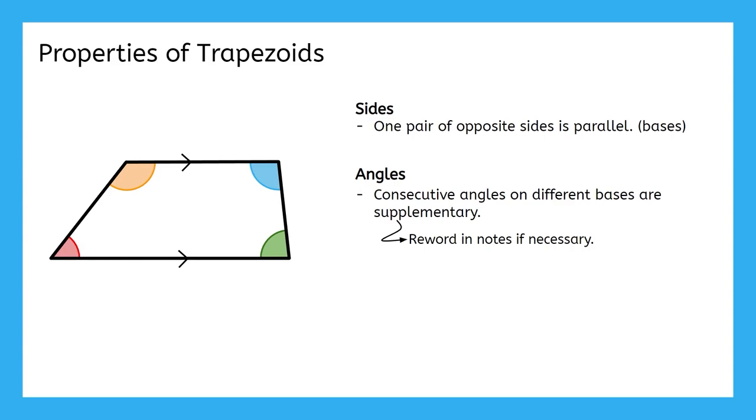In order to prove that a quadrilateral is a trapezoid, this is ultimately what we need to show. You can consider having one, and only one, pair of opposite sides that is parallel to be your trapezoid test. That's actually all there is to it for trapezoids. If you're feeling a bit let down, don't worry. There is a special type of trapezoid with some additional properties.